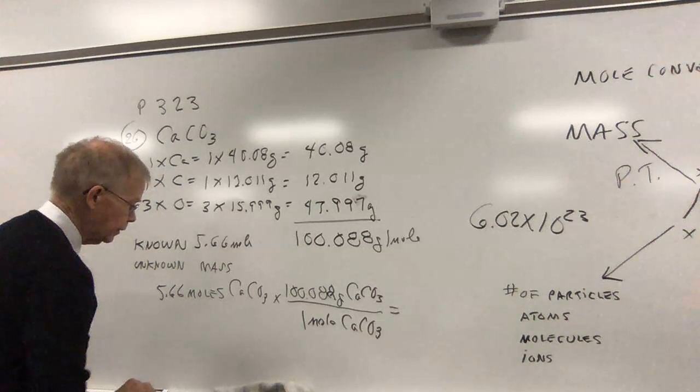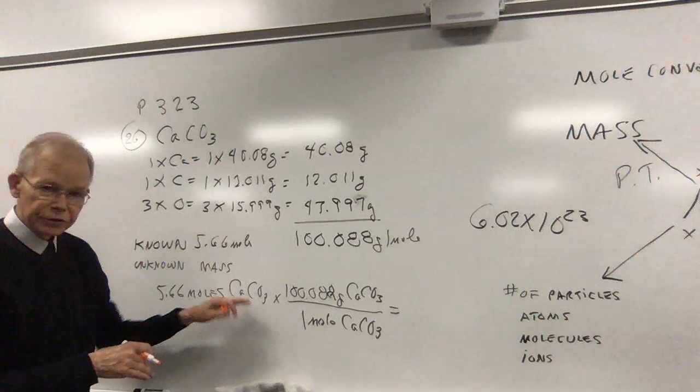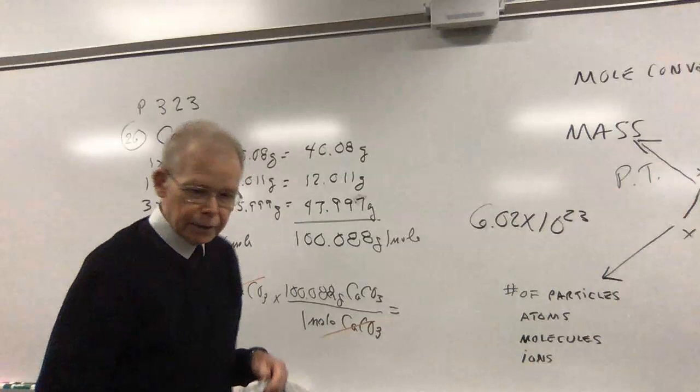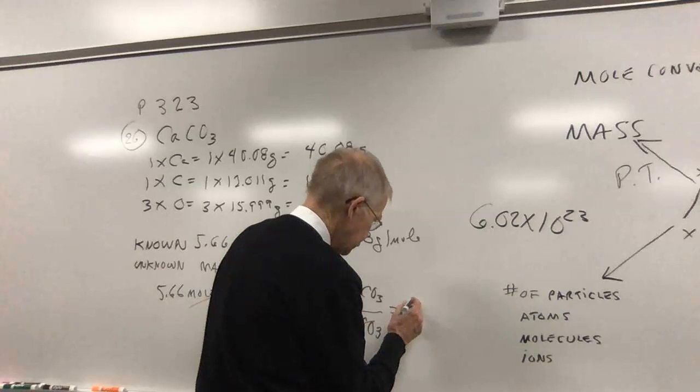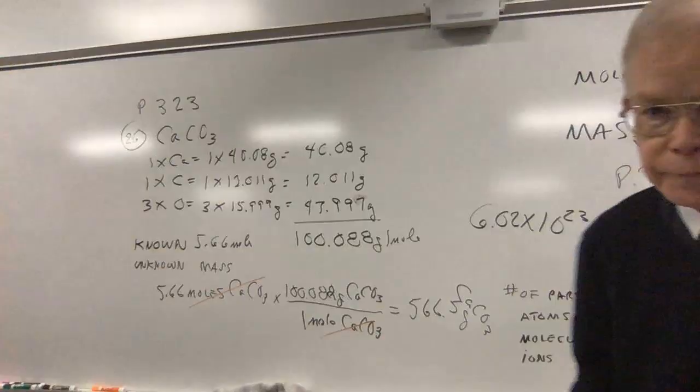When I do my math here, I'm looking at the units. The factor label technique allows me to cancel units that are the same thing. I've got moles of calcium carbonate up here and down here. I purposely set it up so some things are going to cancel. I'll do my multiplication of 5.66 times 100.88, and I got 566.5 grams calcium carbonate. There's the end of my problem.